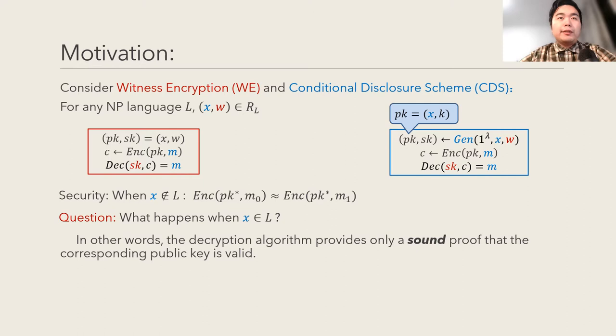Then, we consider the following two encryption schemes close to our requirements: witness encryption and conditional disclosure scheme. Both allow one to generate ciphertexts from an NP instance and its witness, so that if the instance is invalid, no efficient algorithm can decrypt the ciphertext. However, neither of them provides any security when using a valid instance. In other words, the decryption algorithm provides only a sound proof that the corresponding public key is valid.